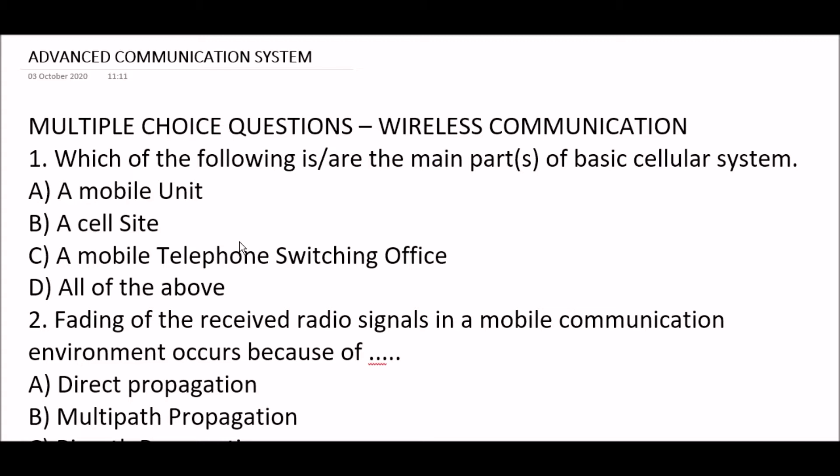First question: Which of the following are the main parts of a basic cellular system? Option A: a mobile unit. Option B: a cell site. Option C: a mobile telephone switching office. Option D: all of the above. The right answer is Option D, all of the above. A mobile unit, a cell site, and a mobile telephone switching office — they all are the main parts of a basic cellular system.